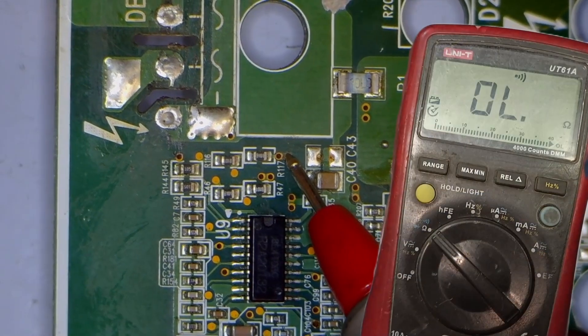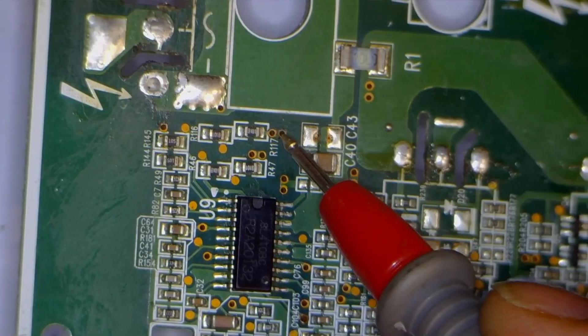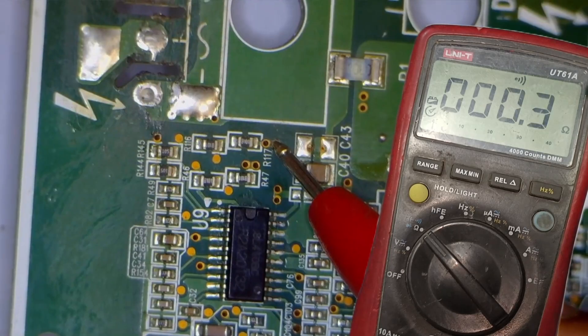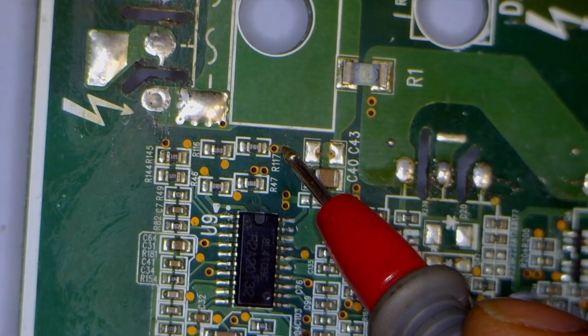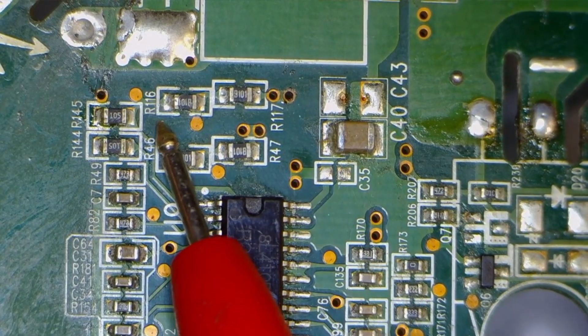The multimeter's beep mode is working perfectly. So, I place one probe on the point connected to the master auxiliary winding. Then, I'll check it against various points here to determine the connection. There is no beep sound when checking with this point. Now, I will place the red probe on another point. At this point, the auxiliary winding is making a connection. Here, two resistors are connected, R117 and R116.